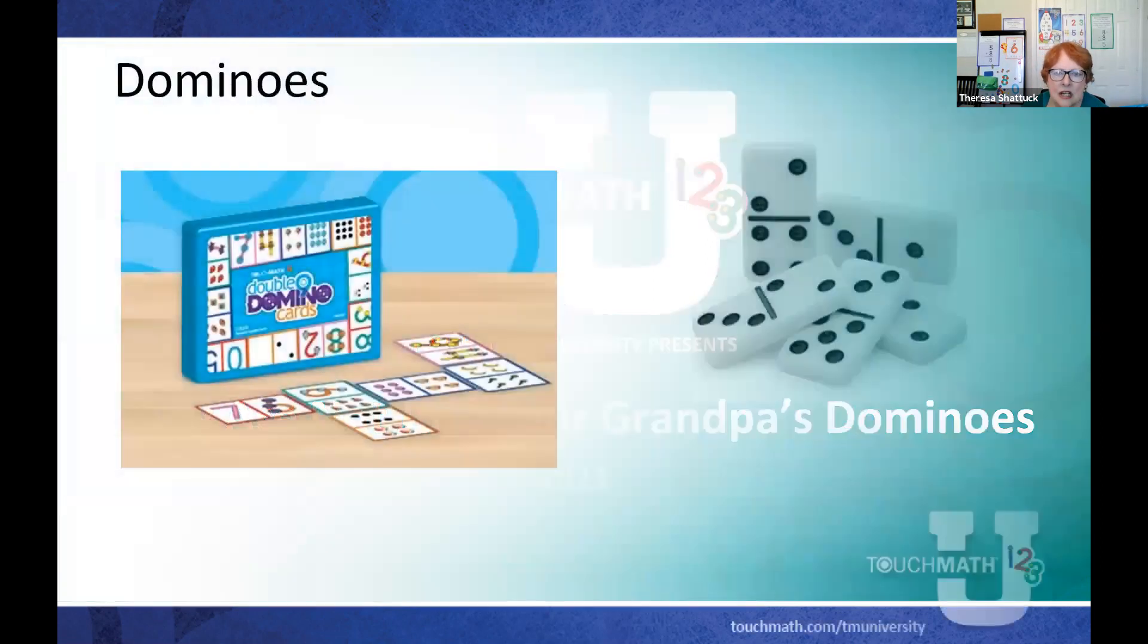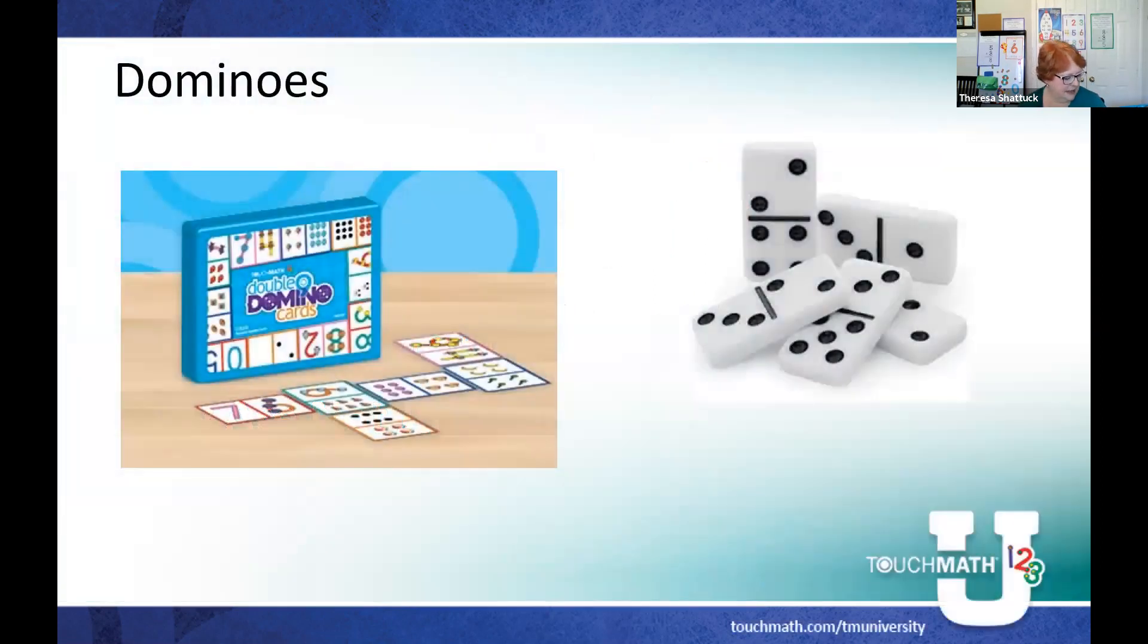TouchMath dominoes are cards set up like dominoes. There are five different sets in the box, and each set is configured a little differently. This one has touch numerals and numerals, so on one side you'll have a plain numeral and on the other side you'll have the touch points.